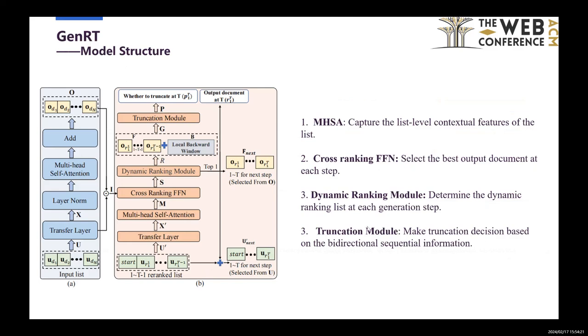The third is the Dynamic Ranking Module, used to determine the dynamic ranking list. The fourth is the Truncation Module, used to make truncation decisions based on the bidirectional sequential information.